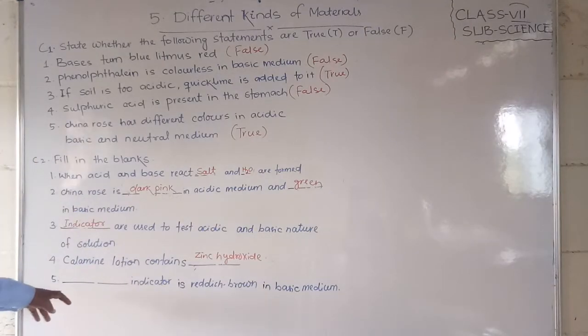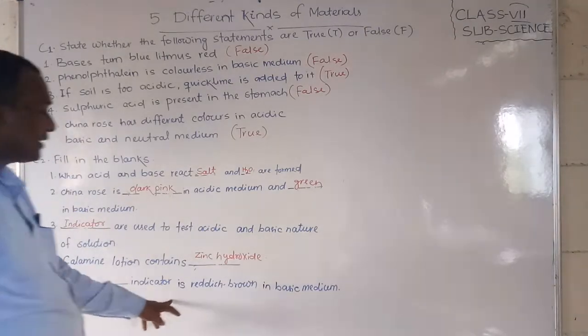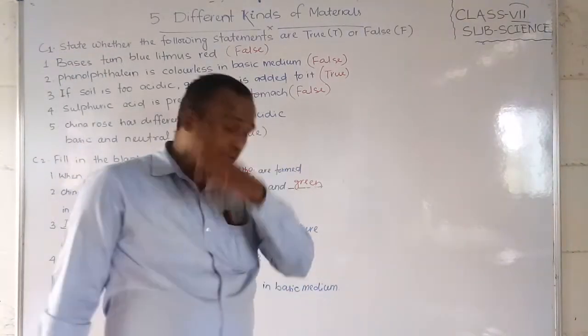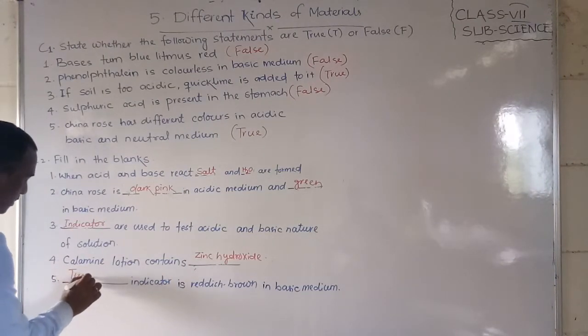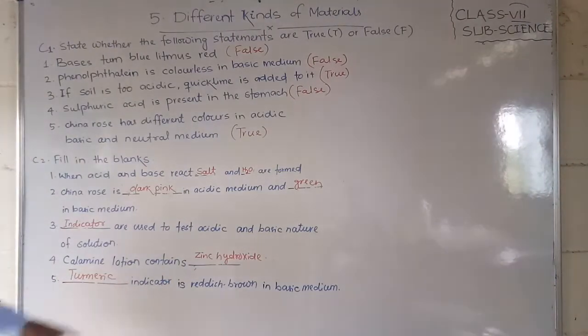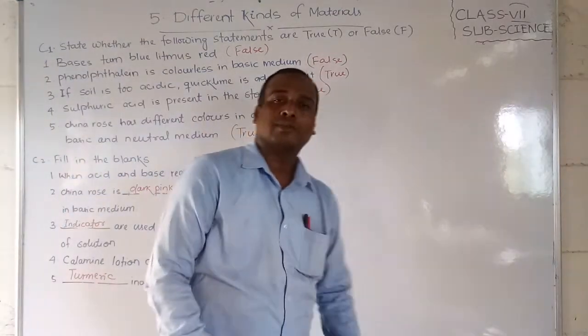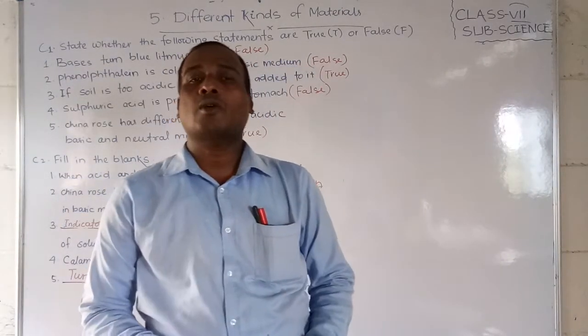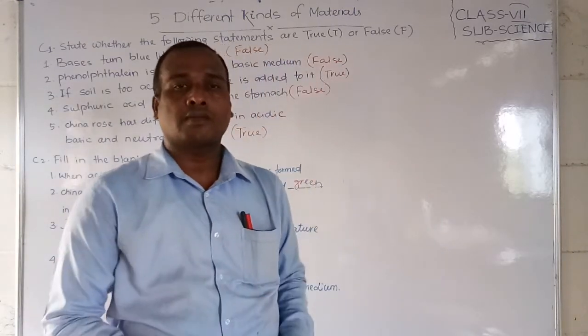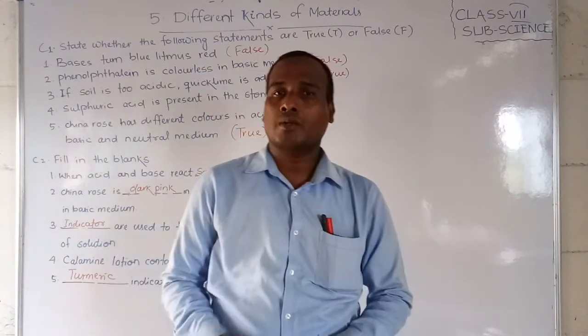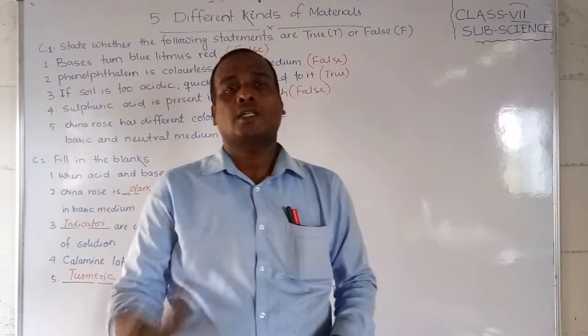Calamine lotion contains zinc hydroxide, oxide. Fifth question: Blank indicator is reddish brown in basic medium. One natural indicator is turmeric. Turmeric is one of the indicators. Turmeric indicator is reddish brown in basic medium.